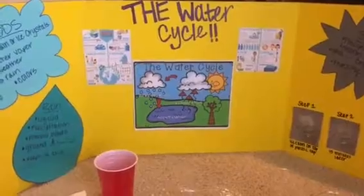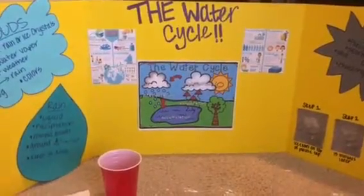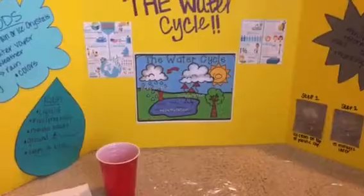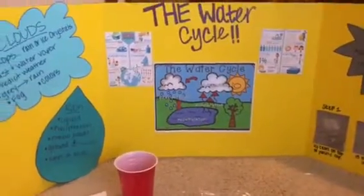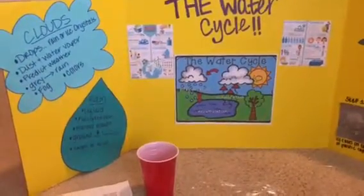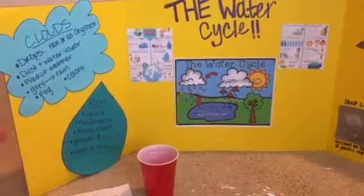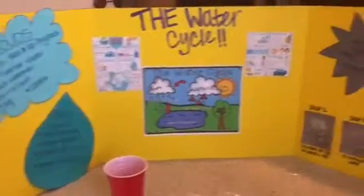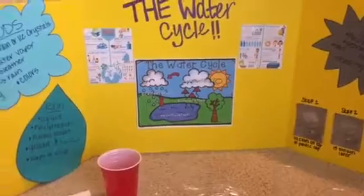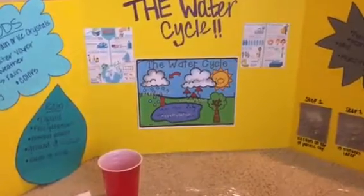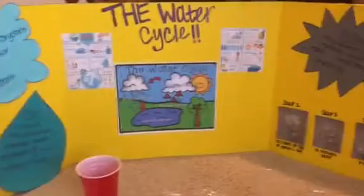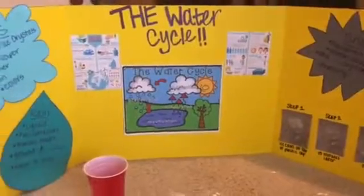I'm just going to go over what I have created for my trifold poster. This basically covers little fun facts and information that covers what clouds, rain, and snow are — indirect knowledge that goes into a water cycle.